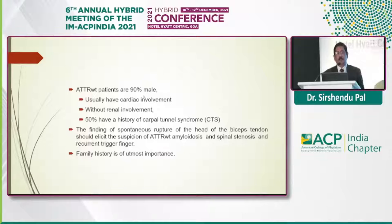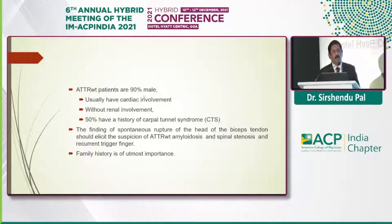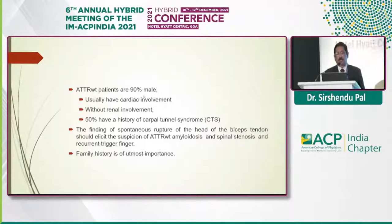ATTRwt patients are 90 percent male and usually have cardiac involvement without renal involvement. ATTRwt is perhaps the only type without renal involvement; almost all other amyloidosis types do have renal involvement. Fifty percent have a history of carpal tunnel syndrome, and spontaneous rupture of the head of the biceps tendon should elicit suspicion of ATTRwt amyloidosis. There may also be spinal stenosis or recurrent trigger finger. Family history is obviously of utmost importance.